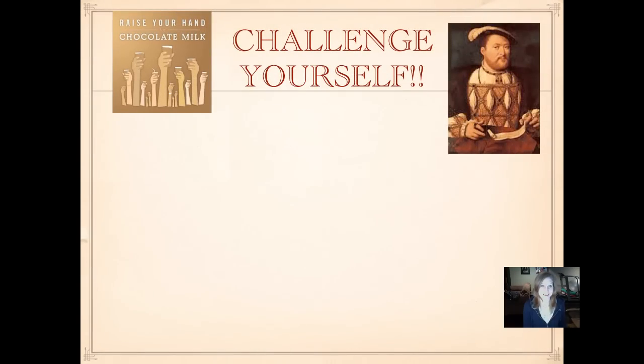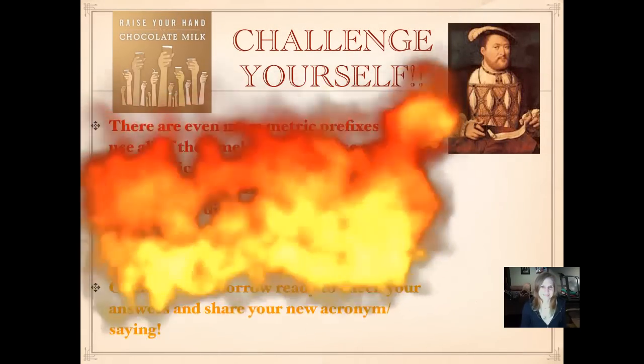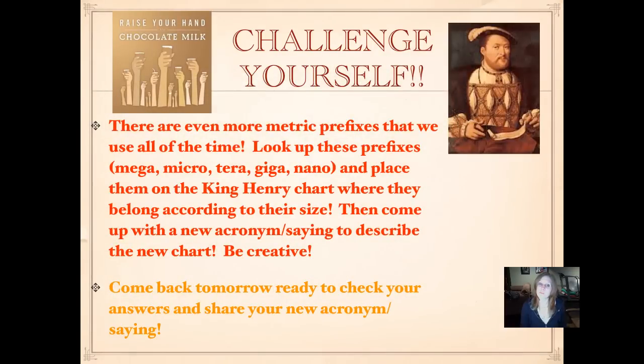It's time to challenge yourself. There are even more metric prefixes that we use all of the time. Look up these prefixes: mega, micro, terra, giga, and nano. And place them on the King Henry chart where they belong according to their size. Then come up with a new acronym or saying to describe the new chart. Be creative. Come up with something completely new or add to the King Henry saying. Come back tomorrow ready to check your answers and share your new acronym or saying.